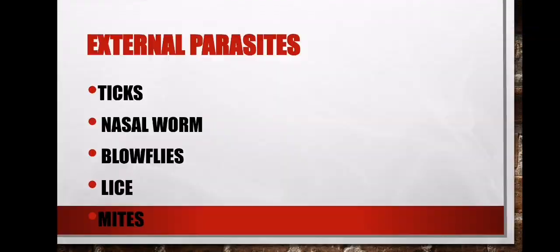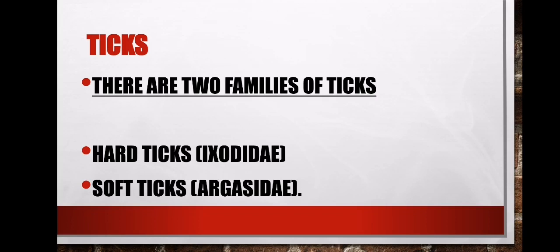Let's start with ticks. There are two families of ticks: hard ticks and soft ticks. Soft ticks are covered by a soft leathery cuticle, while hard ticks are covered by a hard leathery cuticle. Soft ticks have their mouth parts on the underside, and they blow up like a balloon when they suck blood from the animal.